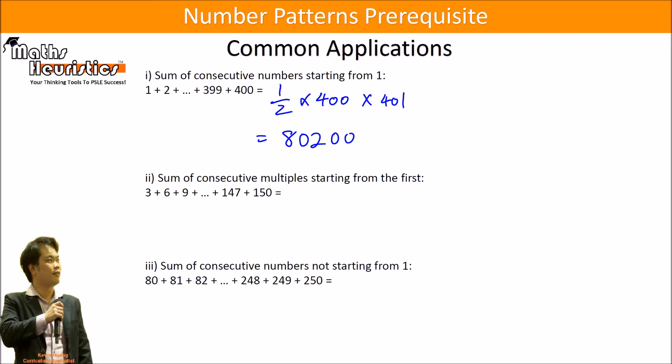Then what about the sum of consecutive multiples starting from the first multiple? Now we see here that there's 3 plus 6 plus 9 plus dot dot all the way up to plus 147 and then plus 150. All of them contain a multiple of 3, so I'll just divide this out by 3 first.